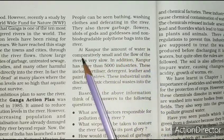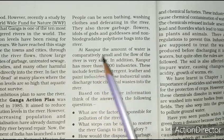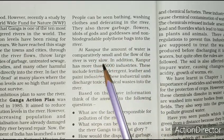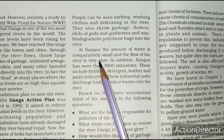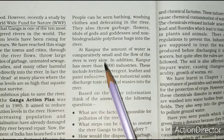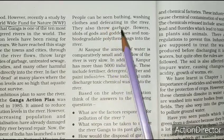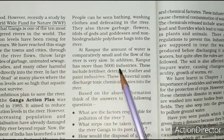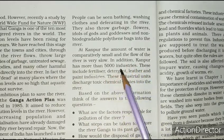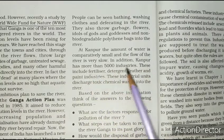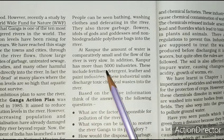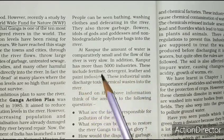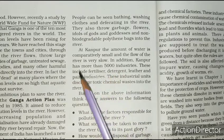At Kanpur, the amount of water is comparatively small and the flow of the river is very slow. Wahan par paani bahut kam ho gaya hai jabki river ka flow bahut slow hai. In addition, Kanpur has more than 5,000 industries. These include fertilizer, detergent, leather and paint industries. Yeh sab apna sara waste Ganga mein dump karte hain.